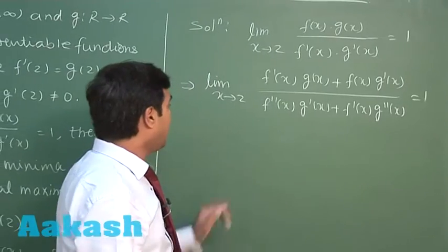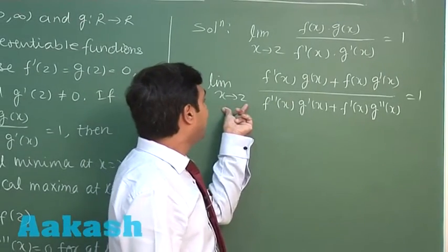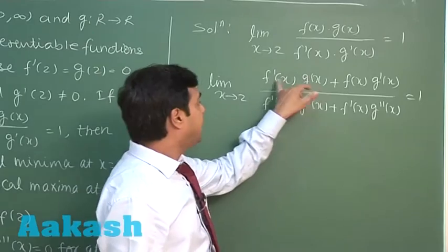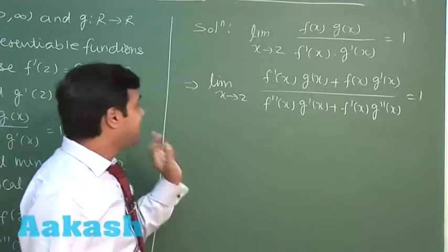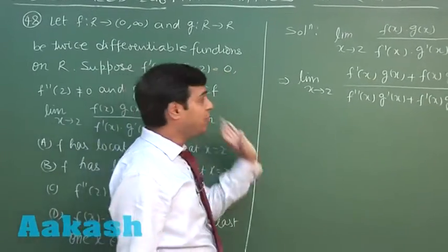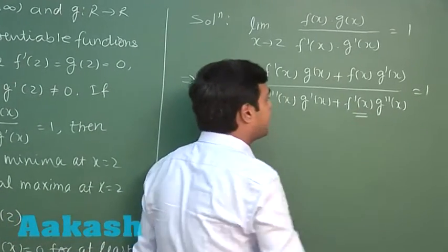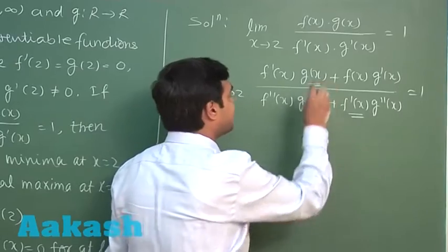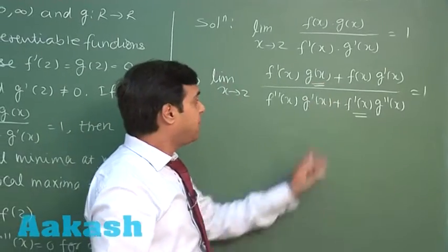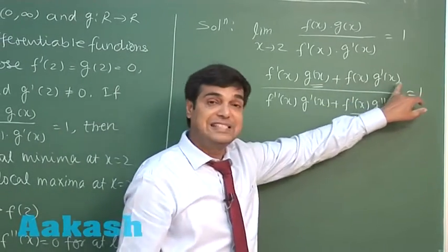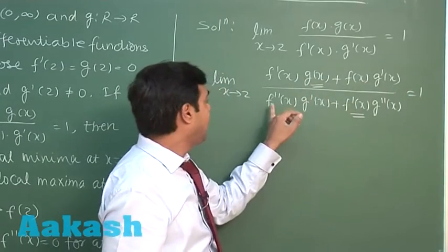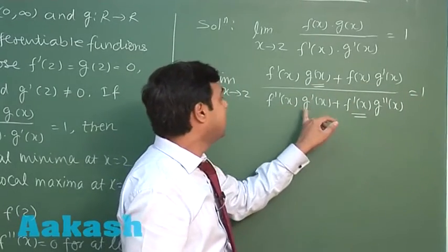Checking limit again, on substituting 2, we can see that this is f dash 2 g of 2 and so on. Since the terms f dash 2 and g of 2 are 0 each, so f dash 2 will make this term 0 and g of 2 will make this term 0. We will be left with f(2) g dash 2 upon f double dash 2 g dash 2.